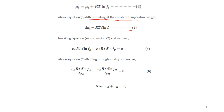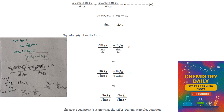Throughout equation 5, we divide by DXA and DXB — for the XA term we divide by DXA, and for the XB term by DXB. We also use the fact that XA + XB = 1. By differentiating this, we get DXA + DXB = 0.